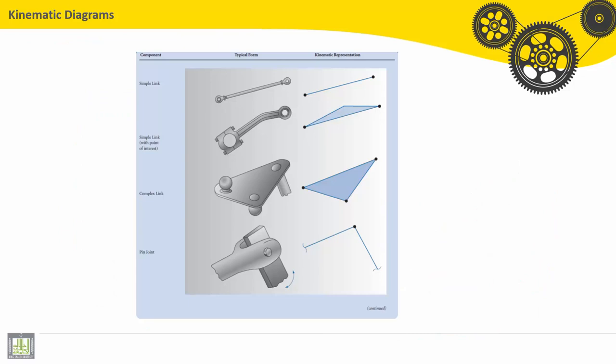Here are some examples for kinematic diagrams. Many joints, many links. Here, for example, for this one, just a line with two joints.